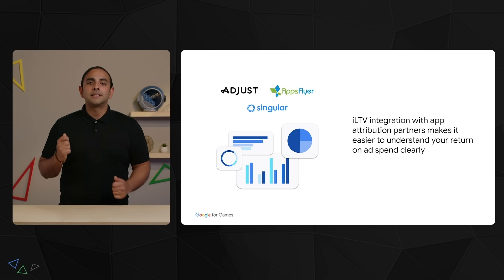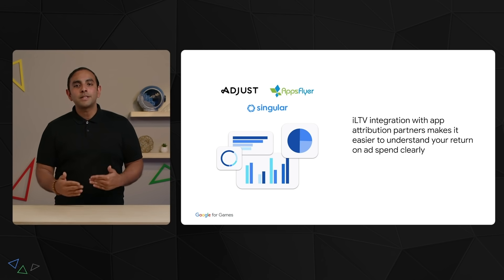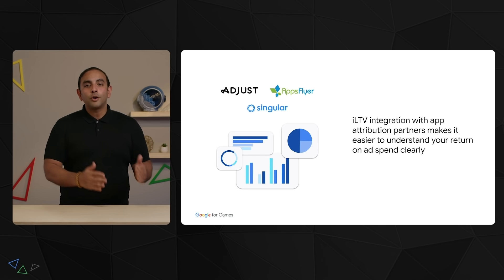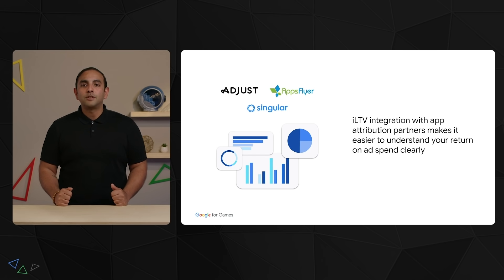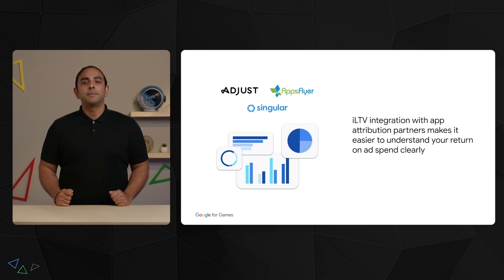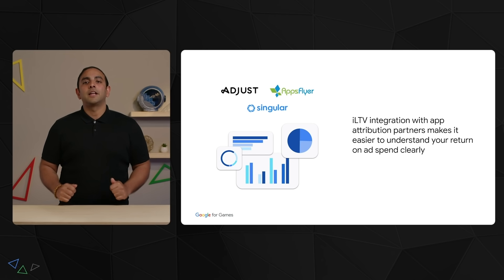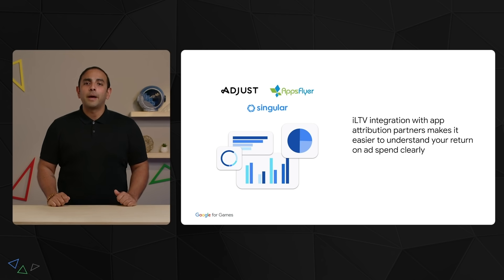Transparency of LTV across partners helps you identify where to allocate spend on campaigns that work well. This is why we're excited to share that AdMob's impression-level LTV feature is also integrated by top app attribution platforms like Adjust, Singular, and AppsFlyer. This makes it easier to get clarity on return on ad spend, also known as ROAS.